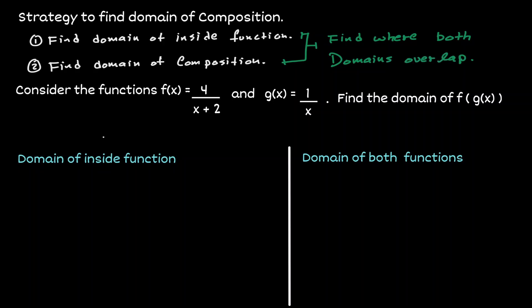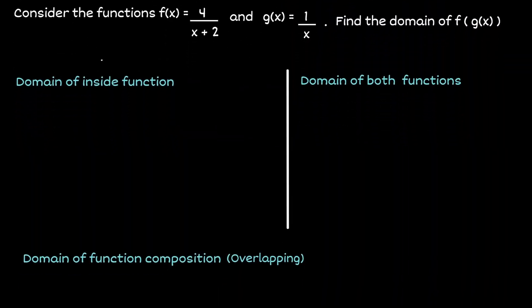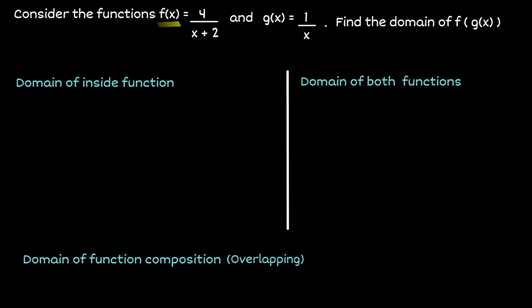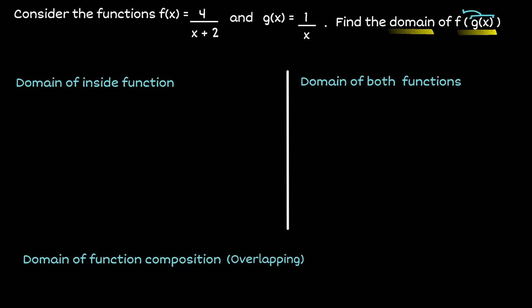Now let's apply this strategy in the following example. We have two functions: f(x) defined as 4 divided by x plus 2, and g(x) defined as 1 over x. We want to find the domain of the composition of g into f. Following this notation, we get g and substitute it inside f. Let's start by finding the domain of the inside function, which is g(x).